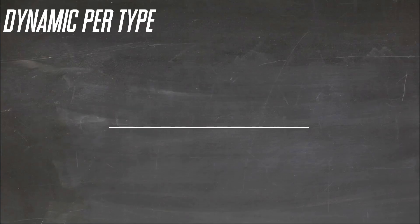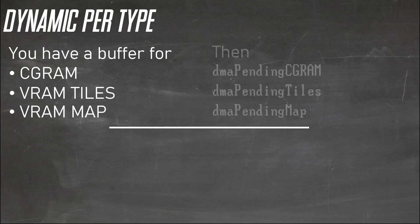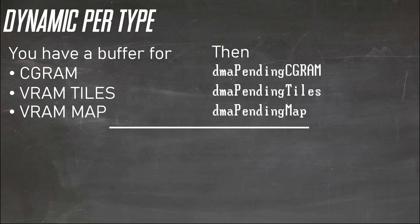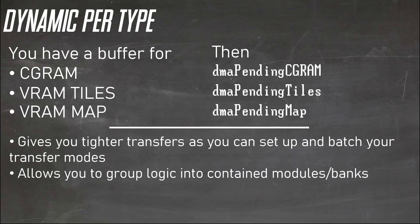Dynamic Per Type: this way you have a custom buffer for CG RAM, screen updates, and tile updates. This keeps the DMA setup tighter as you init the basic variables — mode, dest, etc. — and code with immediate loads on a fixed DMA channel. Then do all the transfers on that mode and target address at once. This keeps your code easier to maintain and extend as each module lives on its own.